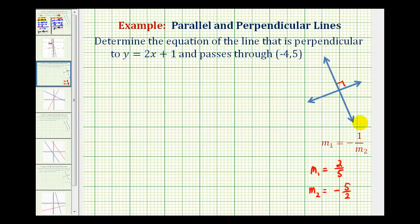So back to our problem. We want a line that is perpendicular to y equals 2x plus 1. This line is in slope intercept form, so we should recognize that the slope of this line is 2 over 1.